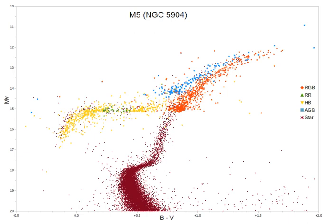The asymptotic giant branch is a region of the Hertzsprung-Russell diagram populated by evolved cool luminous stars. This is a period of stellar evolution undertaken by all low-to-intermediate-mass stars late in their lives. Observationally, an asymptotic giant branch star will appear as a bright red giant with a luminosity ranging up to thousands of times greater than the Sun.